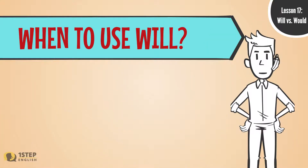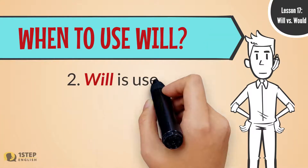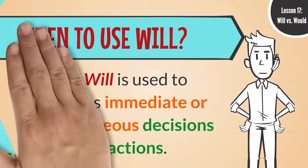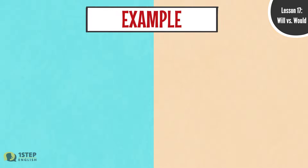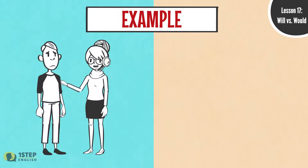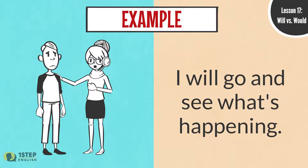When to use Will. Two: Will is used to discuss immediate or spontaneous decisions or actions. For example: I will go and see what is happening.